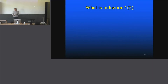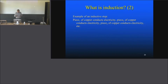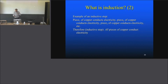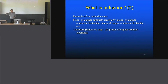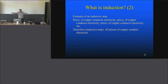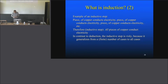That's deduction. Now, what's the difference to induction? Here's an example of an inductive step: piece one of copper conducts electricity; piece two of copper conducts electricity; piece three of copper conducts electricity; and so on for however many you find. Therefore — and now comes the inductive step — all pieces of copper conduct electricity. The point is simply you have a set of examples, and then you go outside of that set, either to the full set of all possibilities or just to the next one. The inductive step, in contrast to deduction, is risky, because it generalizes from a finite number of cases to all cases.